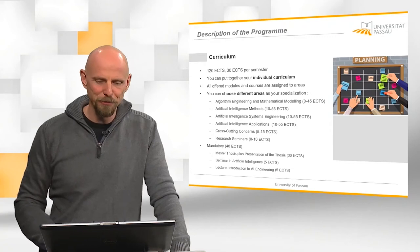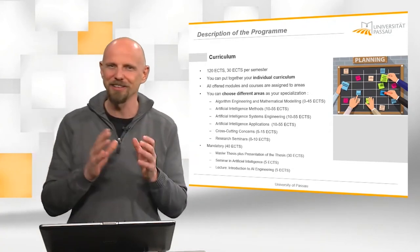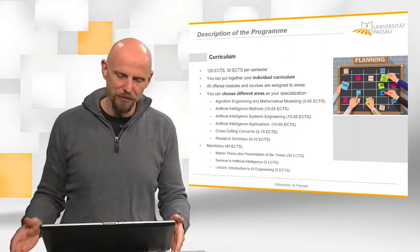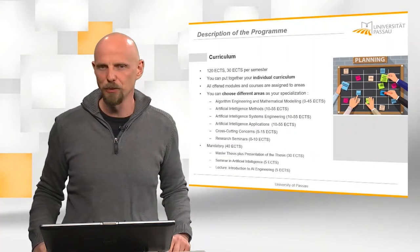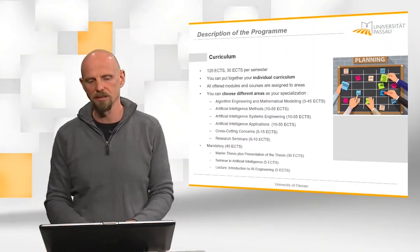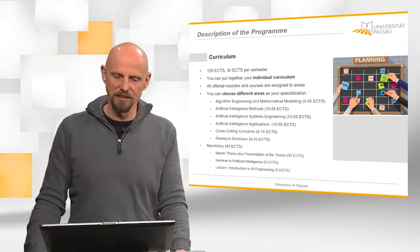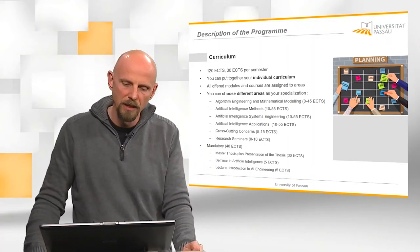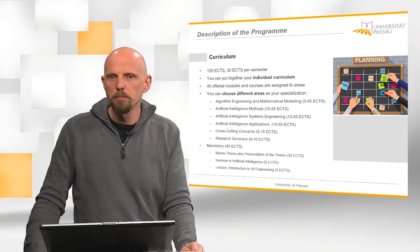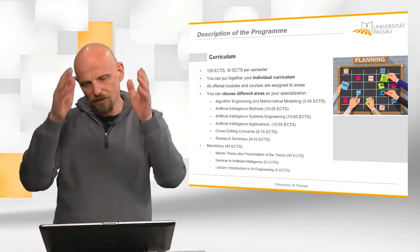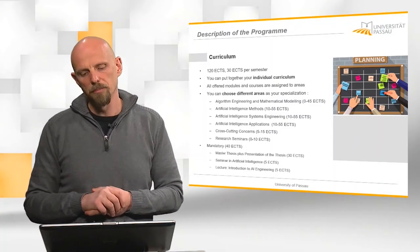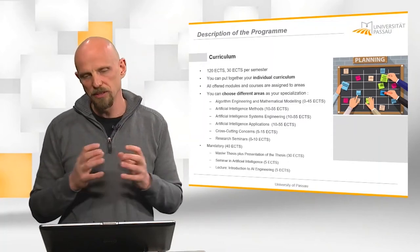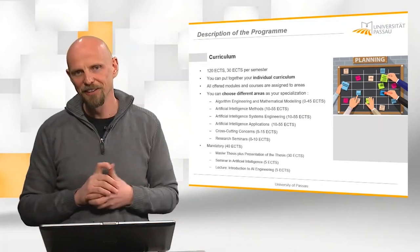So I hope you're still with me and you're really interested now in how exactly the study program looks like. The curriculum is built that you have to complete 120 ECTS points. That is, we have approximately 30 ECTS per semester. That means the average or intended duration is two years or four semesters. And you can put together your individual curriculum. So there is no fixed list of courses that you have to take. But we have defined different specialization areas, research areas along the topics I outlined in the beginning.